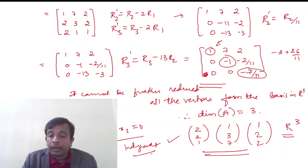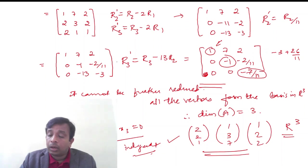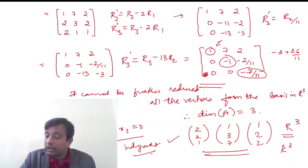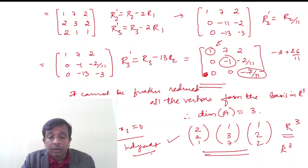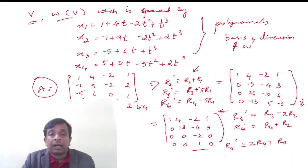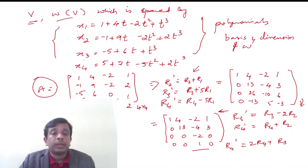The given column vectors can be used to obtain any vector in R3, which defines the dimension and basis of the vector space. Hope the concept is clear. If not, please view again and write any specific clarifications in the comment box. Continuing further, let us consider another problem.